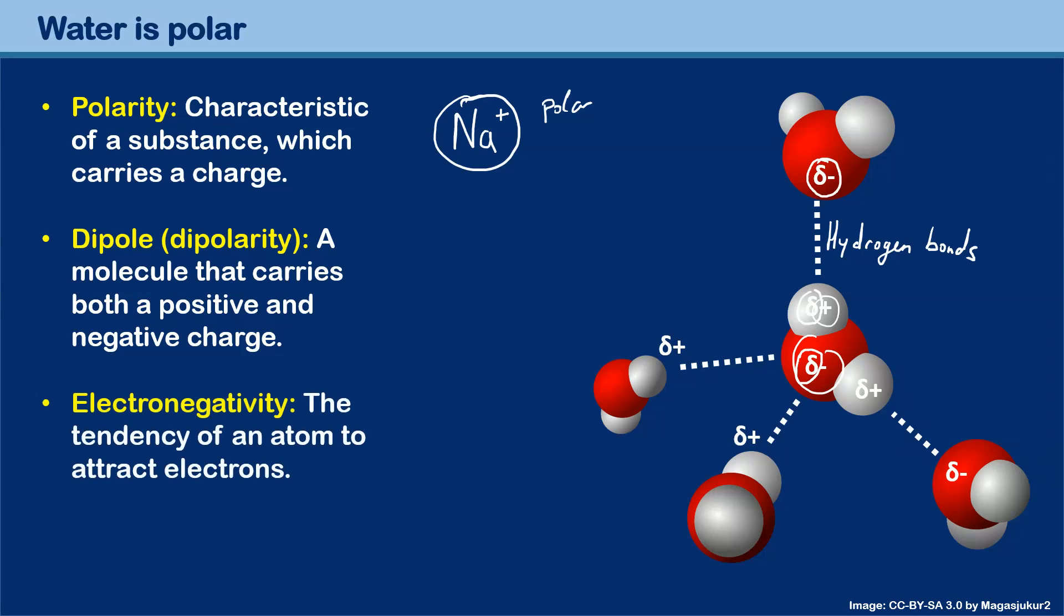And last but not least, the term electronegativity is important. Electronegativity is the tendency of an atom to attract electrons, and electronegativity is actually the reason why the oxygen here is negatively charged and the hydrogens are positively charged.